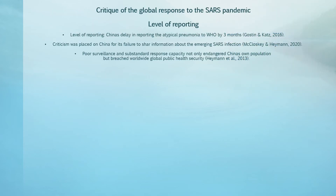The aspect that didn't go well during the pandemic is the level of reporting. SARS first emerged in China in November 2002, but China delayed reporting the outbreak of this atypical pneumonia to the WHO until February 2003. Extensive criticism was placed on China for its failure to share information about the emerging atypical pneumonia early in the outbreak. If information had been shared in a timely manner, it would have allowed countries to prepare and respond early in the pandemic. China's inadequate surveillance and response capacity not only endangered their own population but posed a breach in global health security.